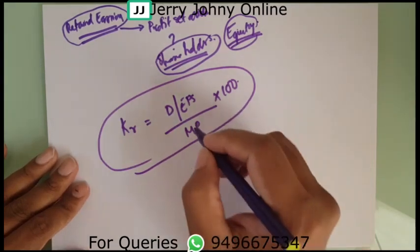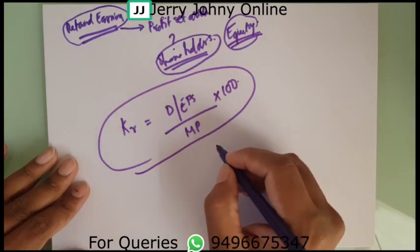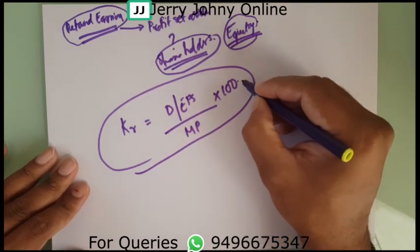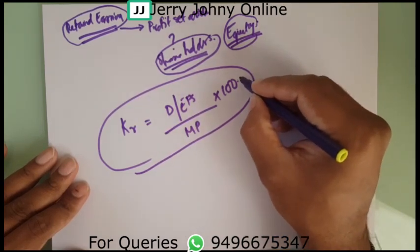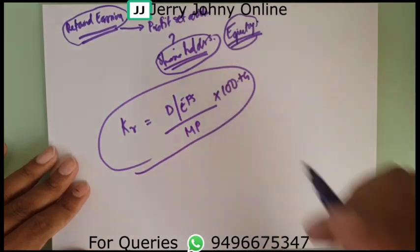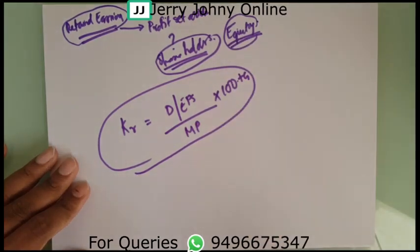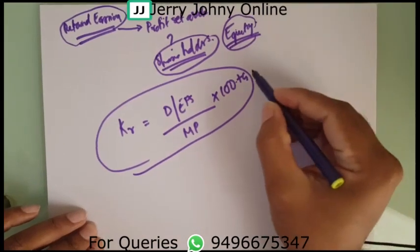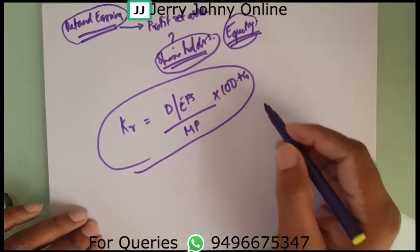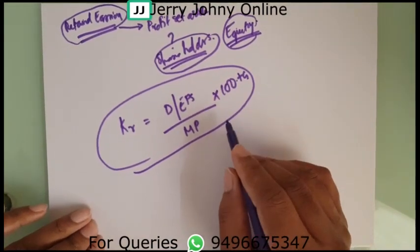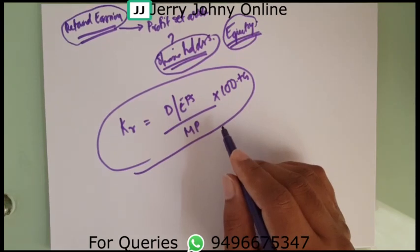Now, in this situation, growth might be given. If growth is given, what you need to do is add the growth rate G to the formula. So we add G if the growth rate is given.